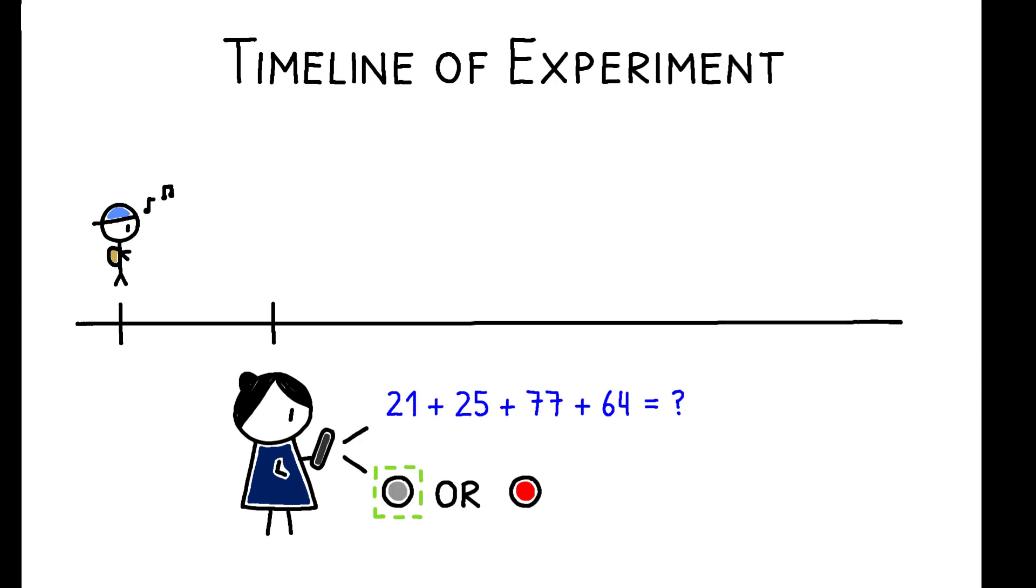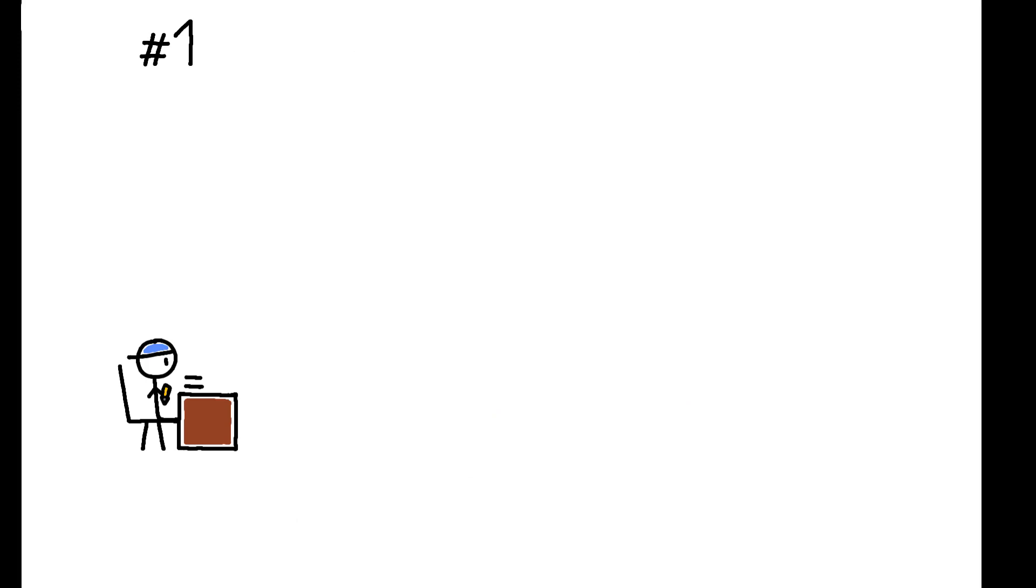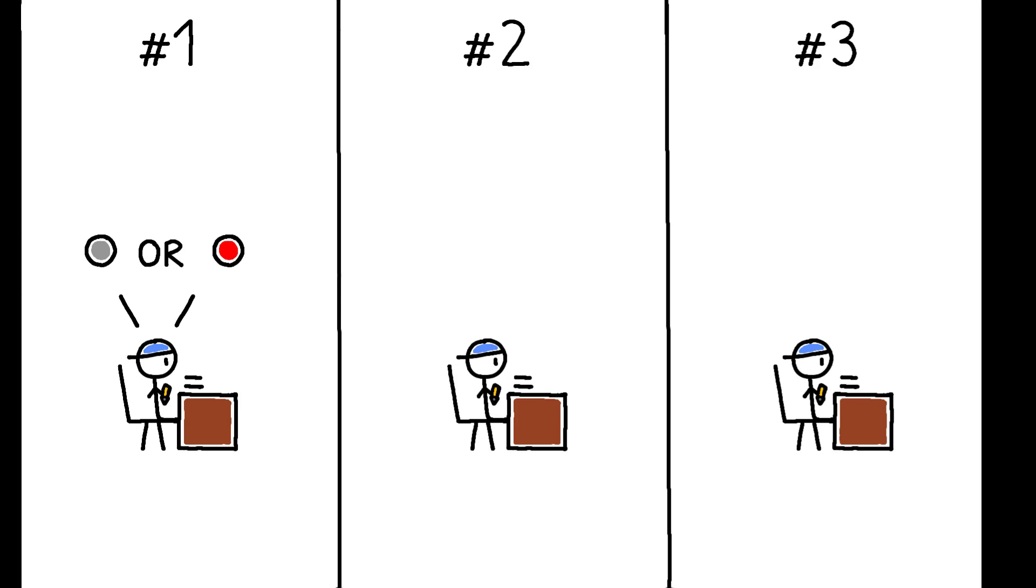Later the same day, children participated in their experiment at school. Each child performed the numerical task three times. In round one, they independently chose the incentive scheme they wanted. In round two, they were assigned their parents' chosen scheme. And in round three, all children were subject to the same scheme to provide a common measure of performance.